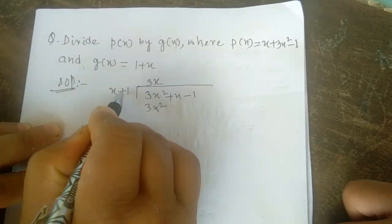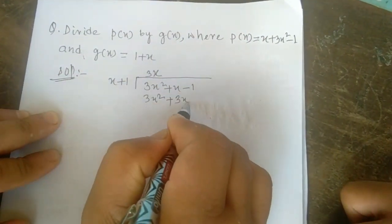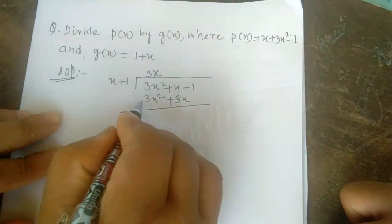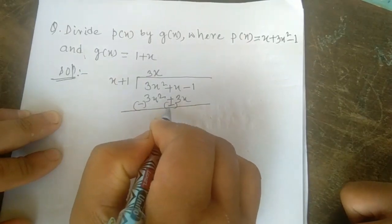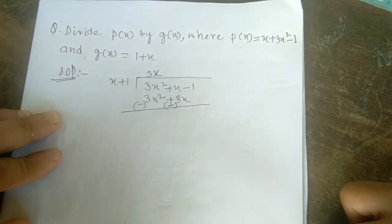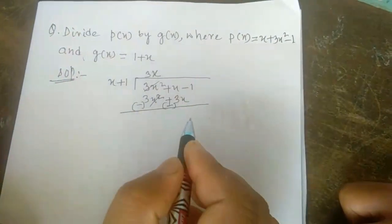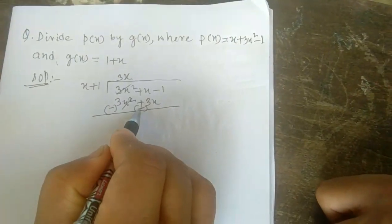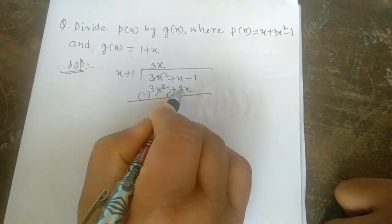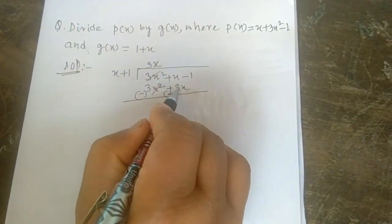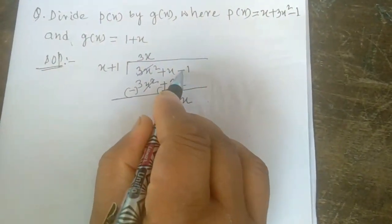3x into x = 3x², and plus into plus = plus, so 3 ones are 3x. Then we change the sign: plus becomes minus, plus becomes minus. If minus sign, it becomes plus. Negative 3x² and positive 3x² cancel. After changing sign, you have to see the new sign. It is -3x; this is +x. So from 3x you subtract x to get 2x. This is greater, so minus sign.